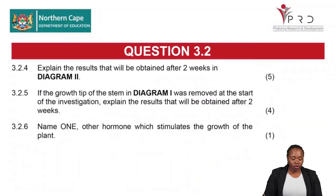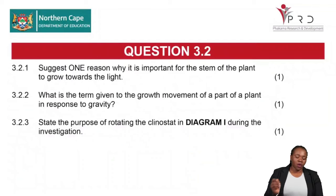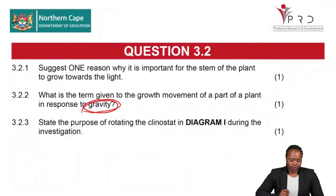Question 3.2.2 asks for the term given to the growth movement of a plant in response to gravity. This is referred to as geotropism.